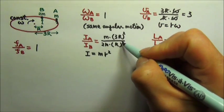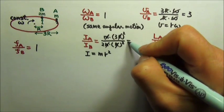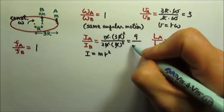The r squared terms cancel, the m's cancel. So this gives 3 squared, which is 9, divided by 2.